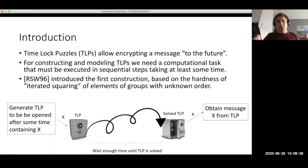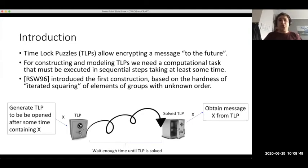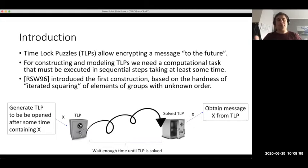The first people to define and introduce a notion and construction of time-lock puzzles were Rivest, Shamir, and Wagner in '96, who introduced both the notion of time-lock puzzles and their construction based on the hardness of iterated squaring — or sequential squaring — of elements of groups with unknown order.